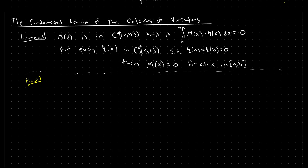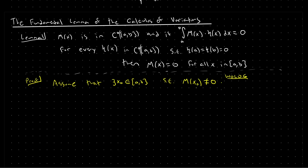This lemma has a very nice proof, and essentially it's a proof by contradiction. We assume that there exists some point x₀ in the interval from a to b such that m(x₀) is not equal to zero. Without loss of generality, we'll assume that at this x₀ the function m is positive. If you assume it's negative, the proof extends in exactly the same way.